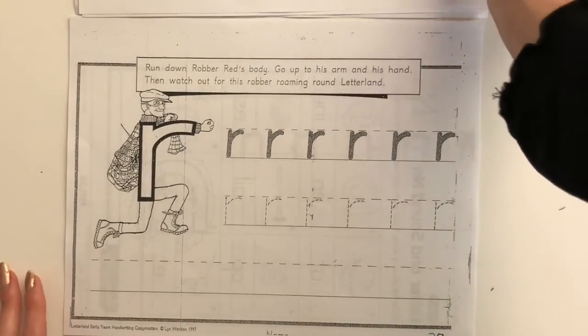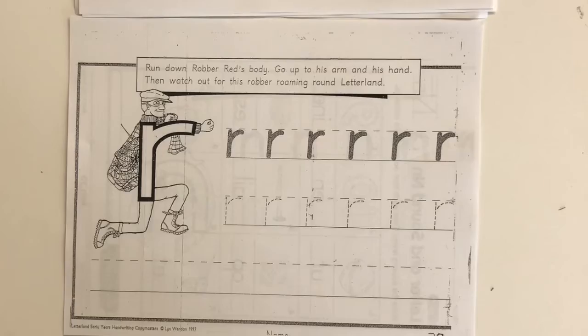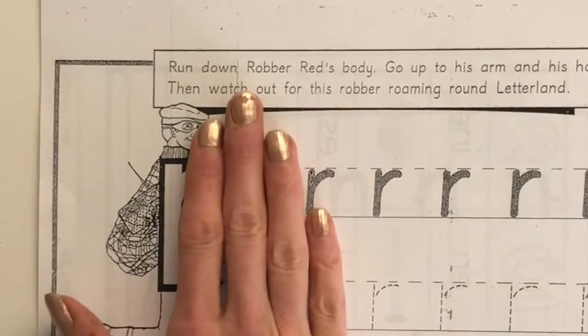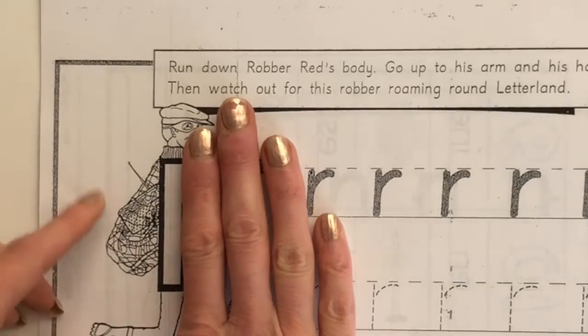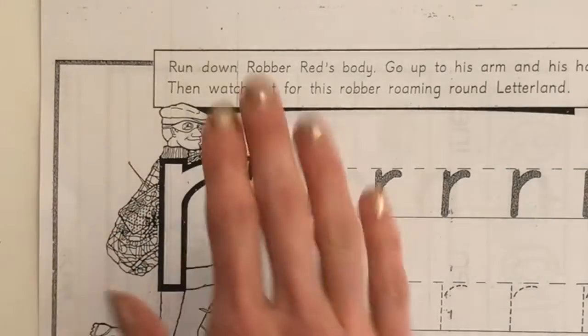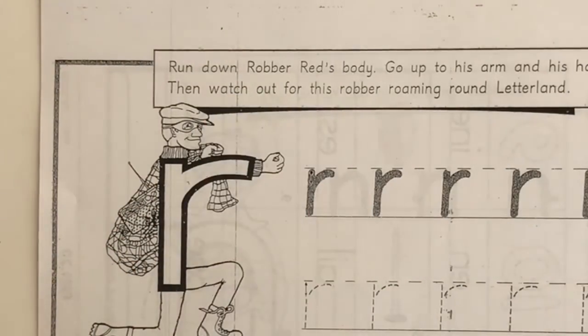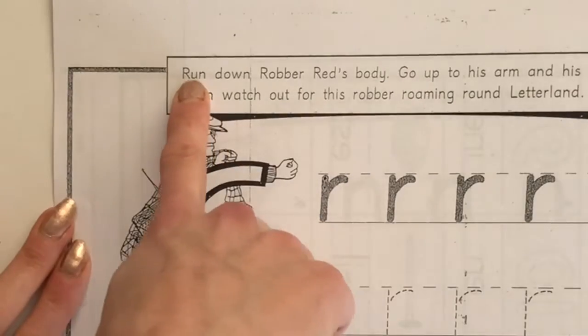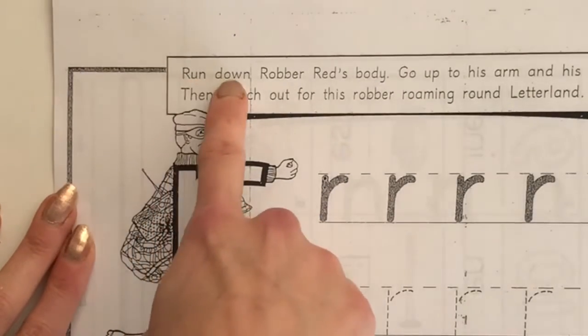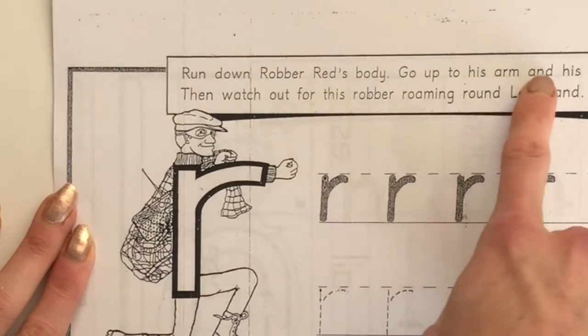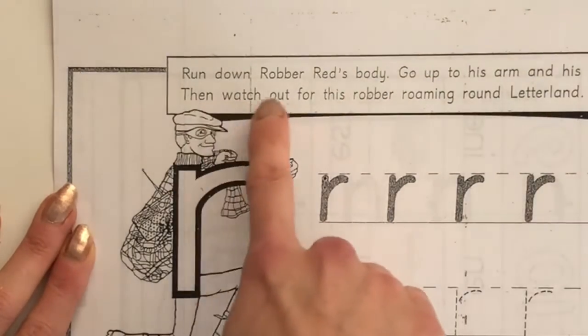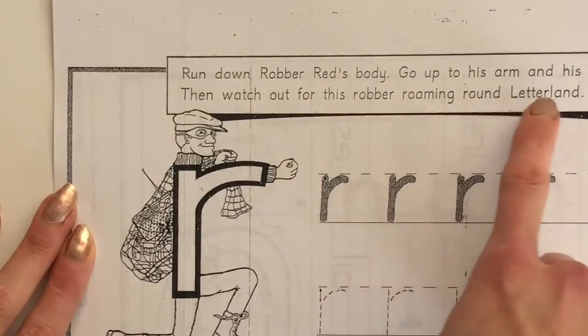Today we are going to practice writing letter R. Now, you'll notice if I cover up this hook, his hand, it looks just like letter I. So we will be starting here and going down first. This character was Robber Red. Run down Robber Red's body, go up to his arm and his hand, then watch out for this robber roaming around letter land.